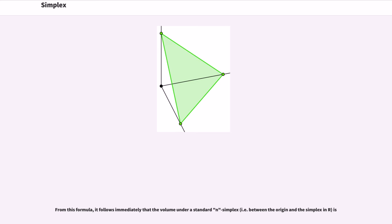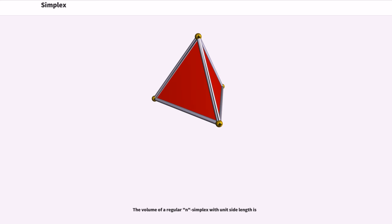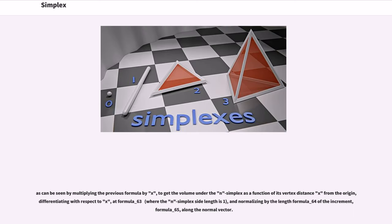From this formula, it follows immediately that the volume under a standard n simplex is 1/n!. The volume of a regular n simplex with unit side length is given by a specific formula. As can be seen by multiplying the previous formula by x^n to get the volume under the n simplex as a function of its vertex distance x from the origin, differentiating with respect to x at a specific value, and normalizing by the length of the increment along the normal vector.